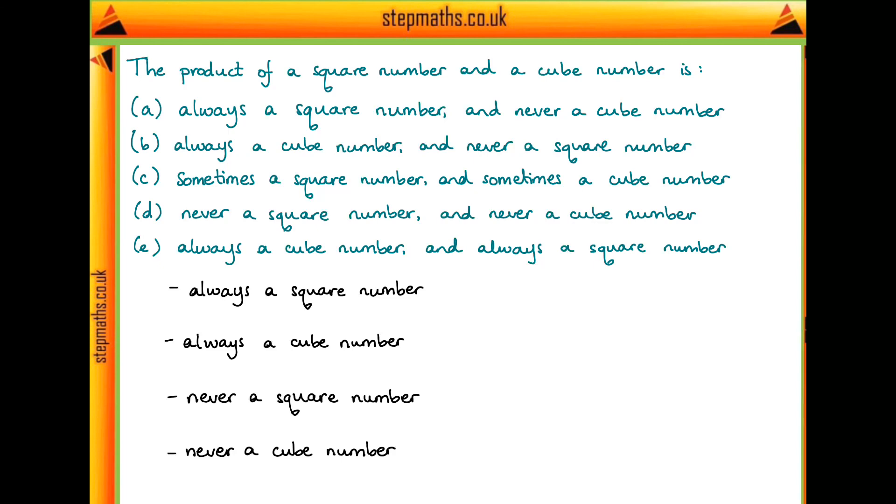In our question it just says a square number and a cube number—it doesn't say they have to be squares and cubes of different things. So we could have the same number for both: 1² × 1³ equals one. Now is one a square number or a cube number?